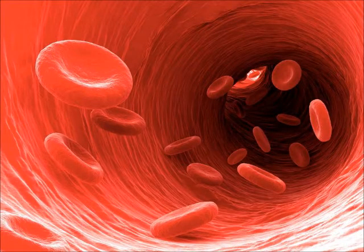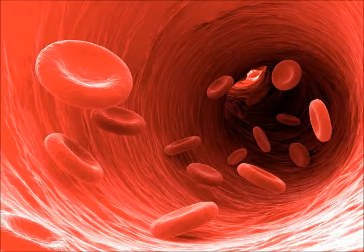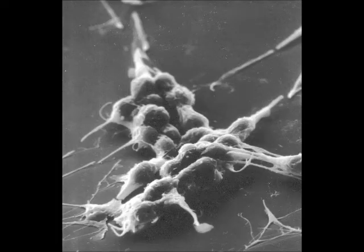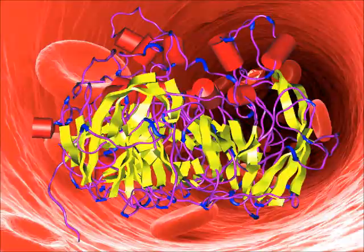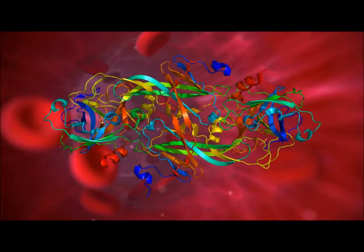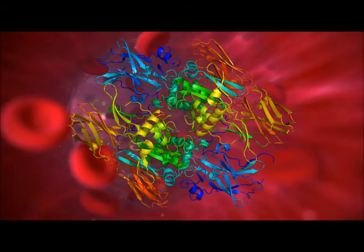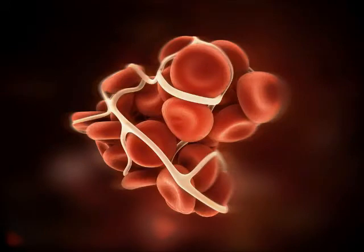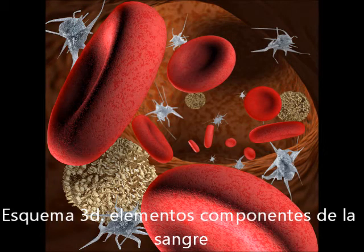Left alone, this is too slow a process. But thrombin doesn't just activate fibrinogen — it also catalyzes the activation of several other factors which are needed for the activation of Prothrombin, and thus the production of thrombin. Factors 8, 5, 11, and 13 are all catalyzed by thrombin, which results in more thrombin, and therefore more fibrin, and therefore a stronger clot. This gives the coagulation cascade its cascade effect.